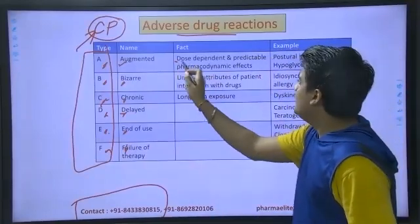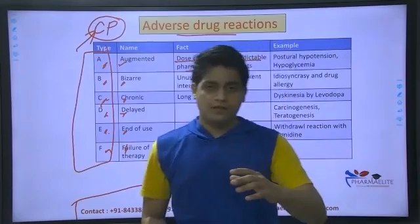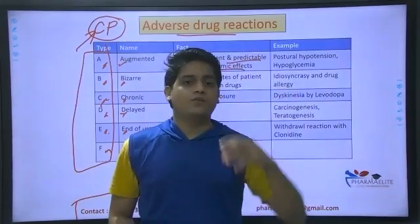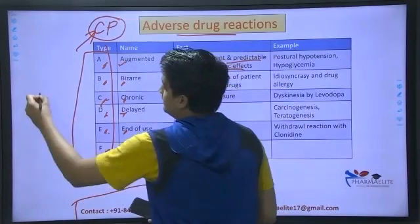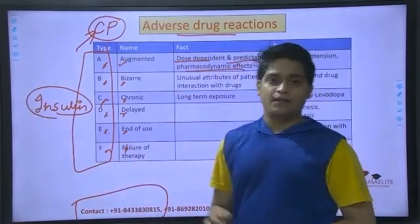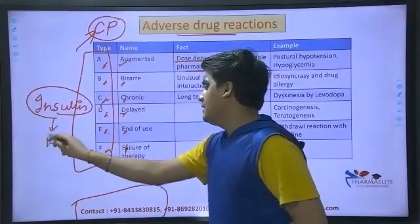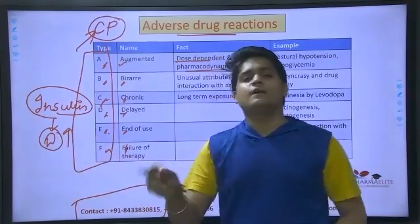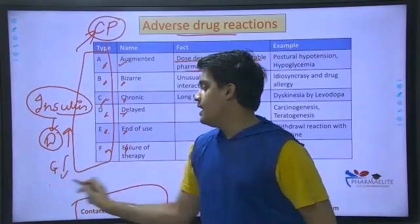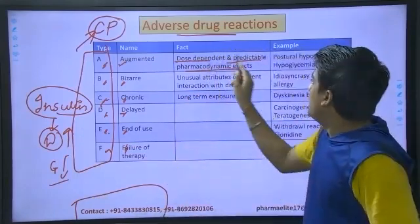A for Augmented means the effect is dose-dependent and predictable pharmacodynamic effect. For example, suppose Ramesh has diabetes and you give him insulin. Insulin decreases sugar levels and brings blood glucose to normal. But if you give too high a dose of insulin, blood glucose levels will decrease greatly — a situation we call hypoglycemia. Same way with blood pressure medications, giving too much leads to an augmented adverse drug reaction — predictable because you know it can happen due to higher dose.